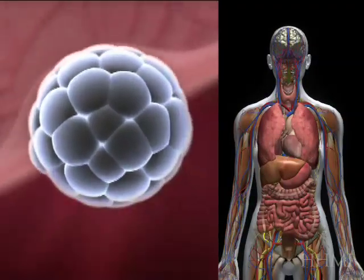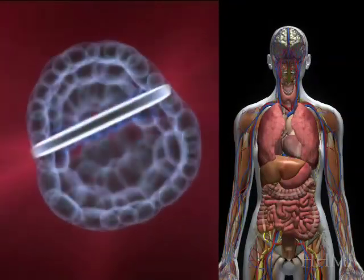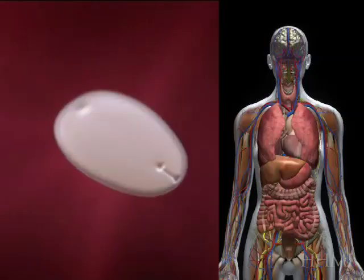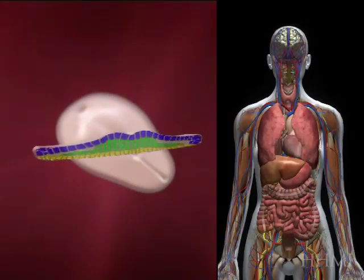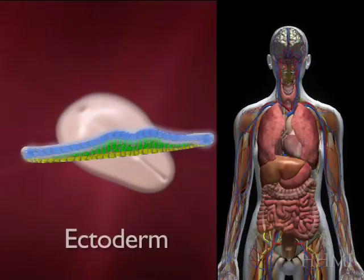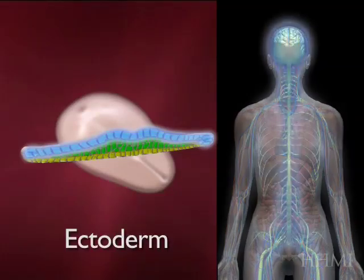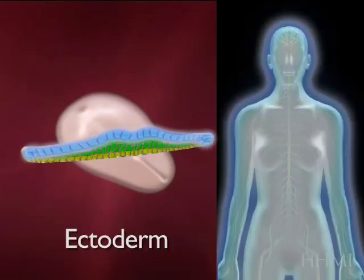If we now look at the embryo after the three germ layers have formed, this video will highlight what comes from the blue germ layer, the ectoderm. You'll see that it makes the nervous system, including the brain, and the skin.